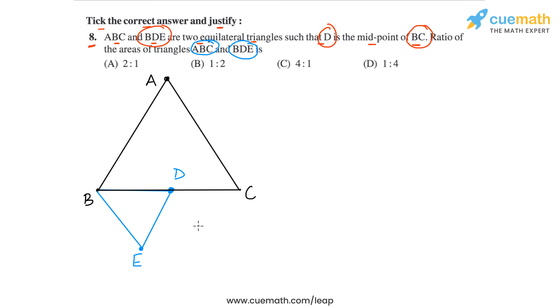So this is actually quite a straightforward problem. Both the triangles ABC and BDE they are similar because both of them are equilateral. So all their angles are 60 degrees. So we can say that both are similar and hence the ratio of their areas will be the square of ratio of corresponding sides. But what is the ratio of corresponding sides?